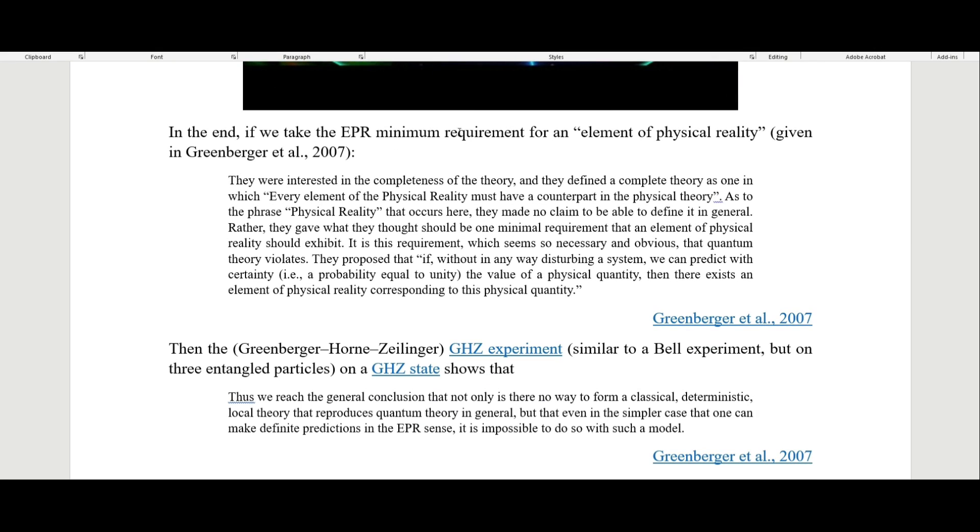In the end, if we take the EPR minimum requirement for an element of physical reality, from the paper by Greenberger et al. 2007, they were interested in the completeness of quantum theory and defined a complete theory as one in which every element of physical reality must have a counterpart in the physical theory. As to the phrase 'physical reality,' they gave what they thought should be the one minimal requirement: if without disturbing a system we can predict with certainty the value of a physical quantity, then there exists an element of physical reality corresponding to this physical quantity.